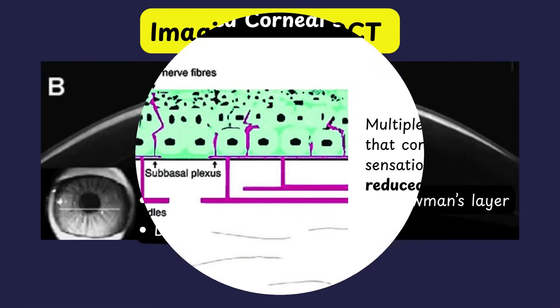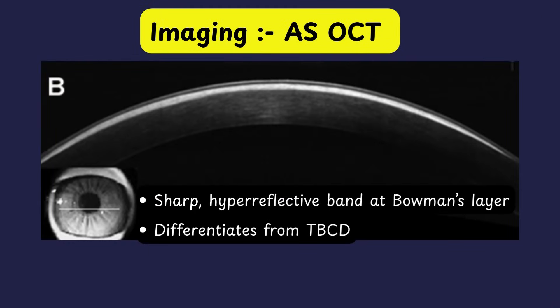Imaging is a high-yield point for diagnosis and planning. On anterior segment OCT, the hallmark finding in RBCD is a sharply margined hyper-reflective band at the level of the Bowman's layer. This crisp stromal interface shows no sawtooth protrusions toward the epithelium. This feature helps differentiate RBCD from TBCD. In RBCD you find a sharp demarcation line between the Bowman's and the stroma with a hyper-reflective band-like structure, whereas in TBCD you will have sawtooth-like projections into the anterior epithelium and the stromal margin with hyper-reflectivity is poorly defined.